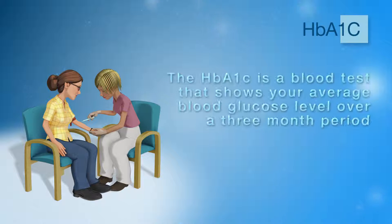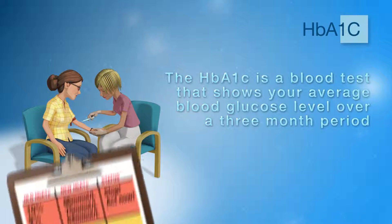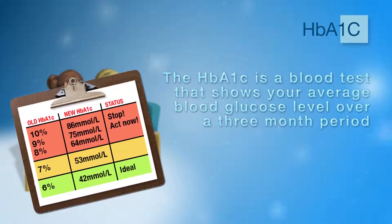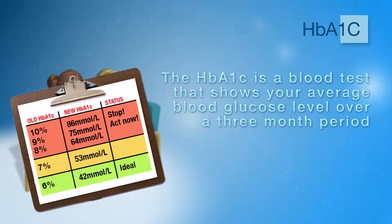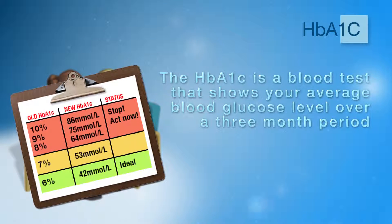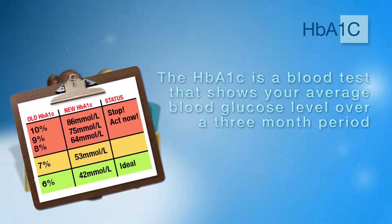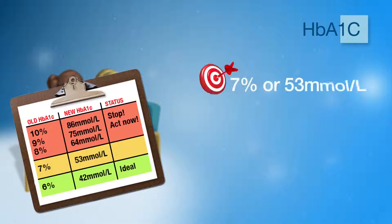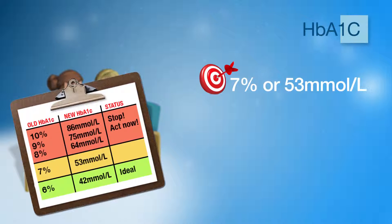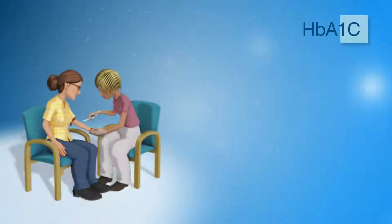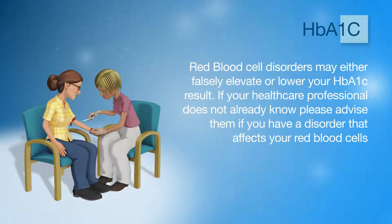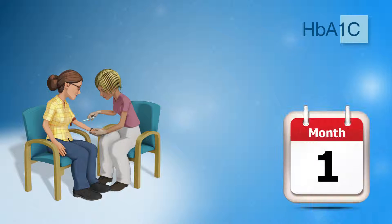The HbA1c is a blood test that shows your average blood glucose level over a 3-month period. HbA1c used to be measured in percent but is now measured in millimoles. Factors such as your age and medical history will determine your target HbA1c; however, most people with diabetes should aim for 7% or less, or 53 millimoles per litre or less. Red blood cell disorders may either falsely elevate or lower your HbA1c result, so please advise your healthcare professional if you have such a disorder. Visit your doctor every 3 months for a HbA1c check.